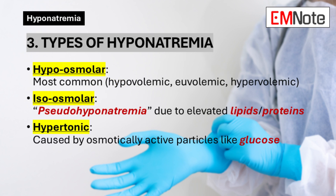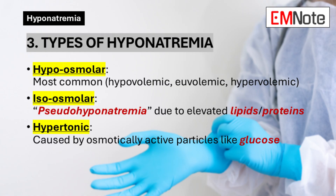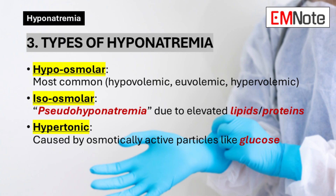Point 3: Types of Hyponatremia. Hyponatremia is classified into different types based on serum osmolality. Hypoosmolar or hypotonic hyponatremia is the most common type, further categorized into hypovolemic, euvolemic, and hypervolemic. Isosmolar hyponatremia, also known as pseudohyponatremia, occurs when the nonaqueous components of serum, like lipids and proteins, are elevated, affecting the measured sodium concentration.